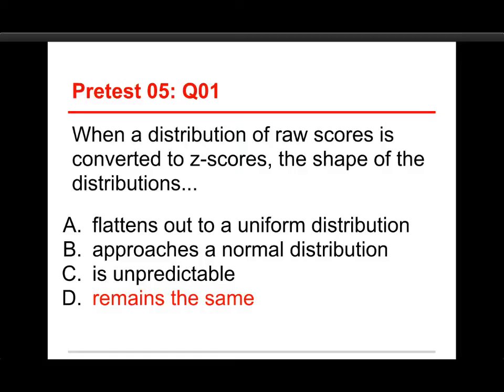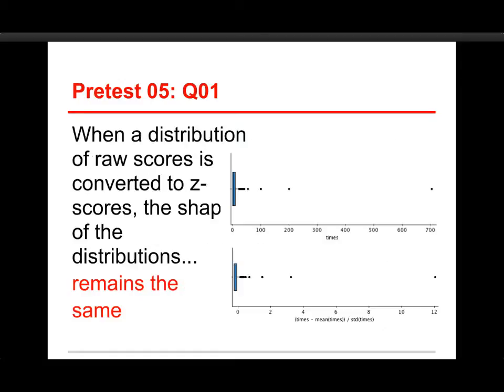A uniform distribution is totally flat across the top, and changing to z-scores does nothing to the shape. Also, it doesn't approach a normal distribution. That's something you talk about with the central limit theorem when you're taking a sampling distribution, but that's a different thing. It's not unpredictable. It stays exactly the same.